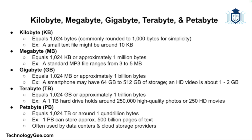The terabyte is 1024 gigabytes, or roughly 1 trillion bytes. Modern hard drives often have capacities starting at one terabyte or higher. To give you a sense of scale, a one-terabyte drive can hold around 250,000 high-quality photos or 250 full-length HD movies. The petabyte is 1024 terabytes, or around one quadrillion bytes. To put this in perspective, one petabyte is enough to store around 500 billion pages of standard printed text. Large organizations like data centers and cloud storage providers often deal with data at the petabyte level.